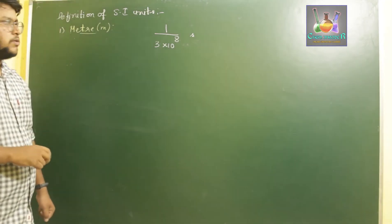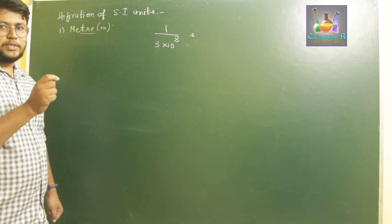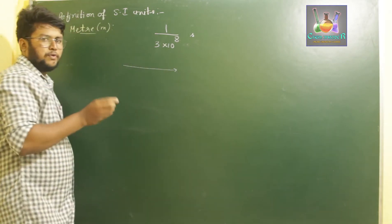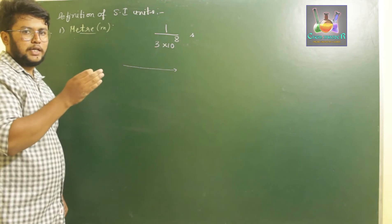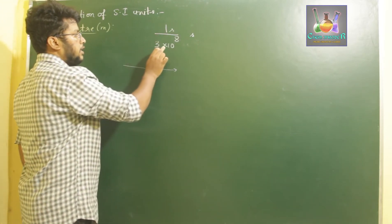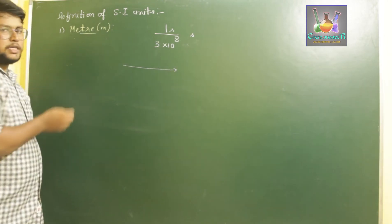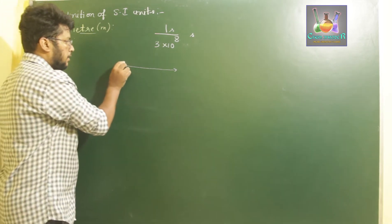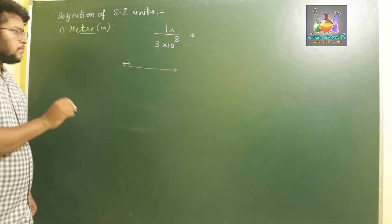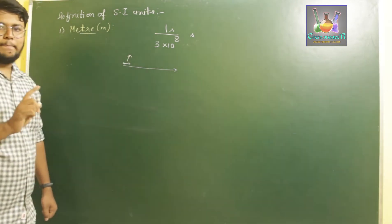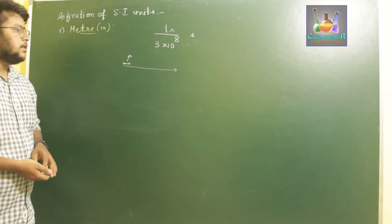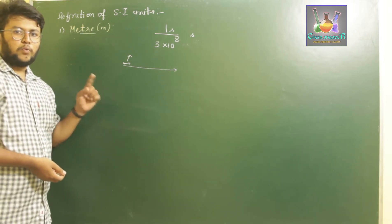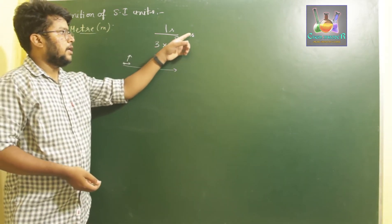So if you divide one second by 3 × 10⁸, you get a very small part of time. At that particular time, light travels a certain distance, and that distance is called one meter. Meter is defined as the path traveled by light in vacuum for one part of 1/(3 × 10⁸) of a second.